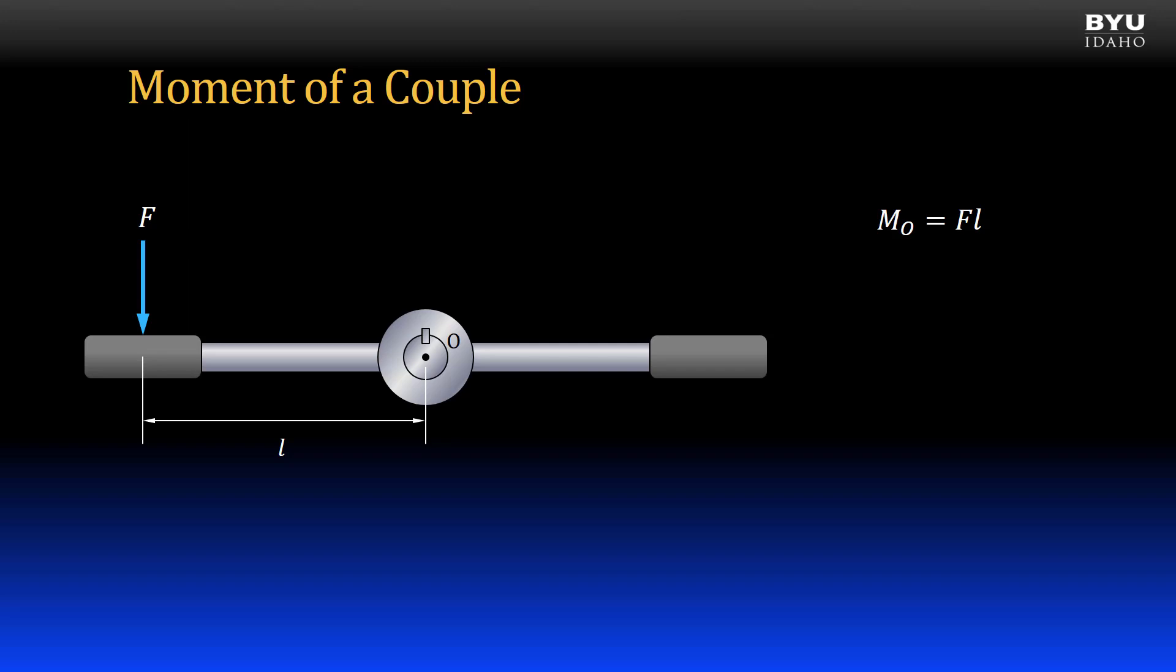I can double the applied moment at point O by applying another force of the same magnitude but in the opposite direction on the opposite handle. These two forces form what we call a force couple, or shortened to a couple.